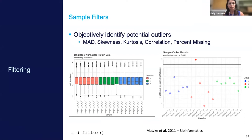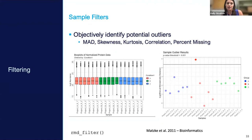A question asked whether different aspects are used for metabolomics versus proteomics in the RMD filter. Yes — for proteomics we typically use four metrics (MAD, skewness, correlation, percent missing), not kurtosis. For metabolomics and lipidomics we reduce to three, removing percent missing because there typically isn't much missing data in metabolomics, so that metric wouldn't differentiate groups. A follow-up question asked whether the RMD filter assesses all features in a sample — yes, the metrics are computed on all observed peptides or metabolites in that sample.